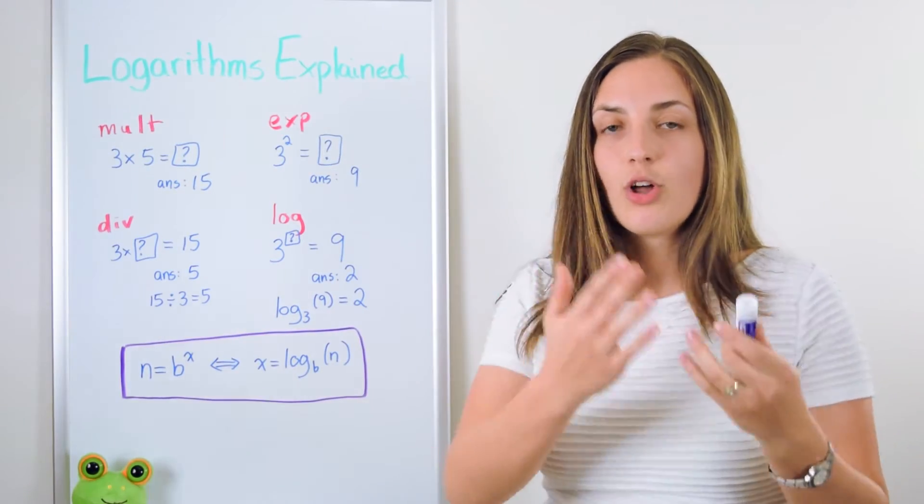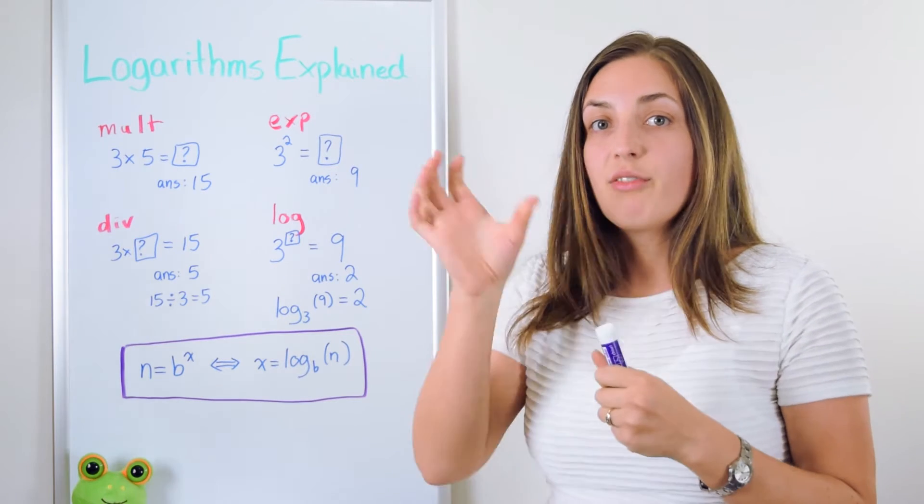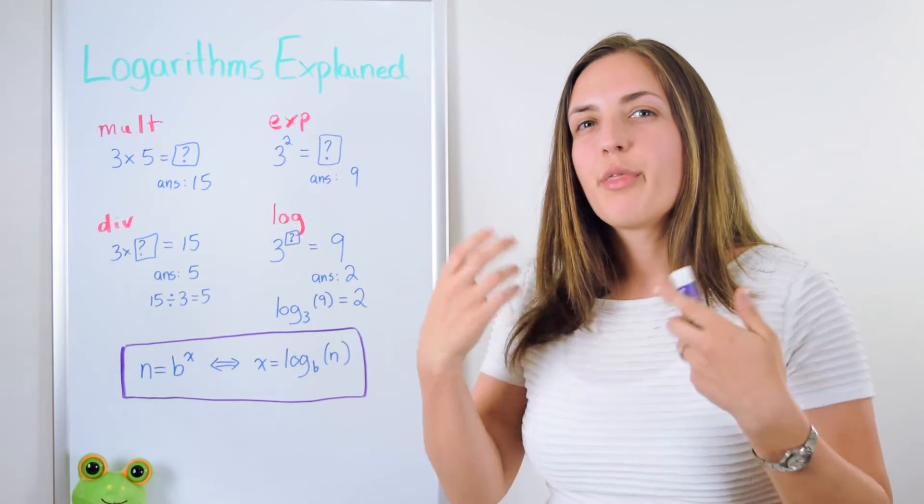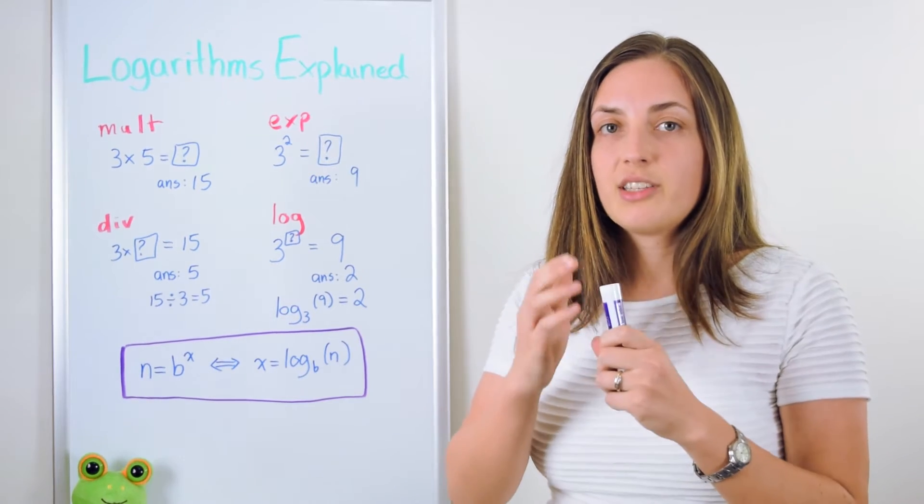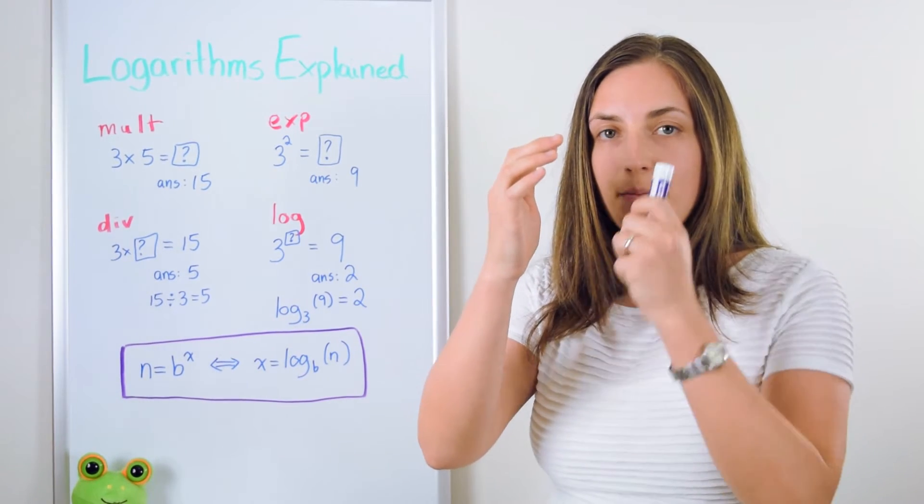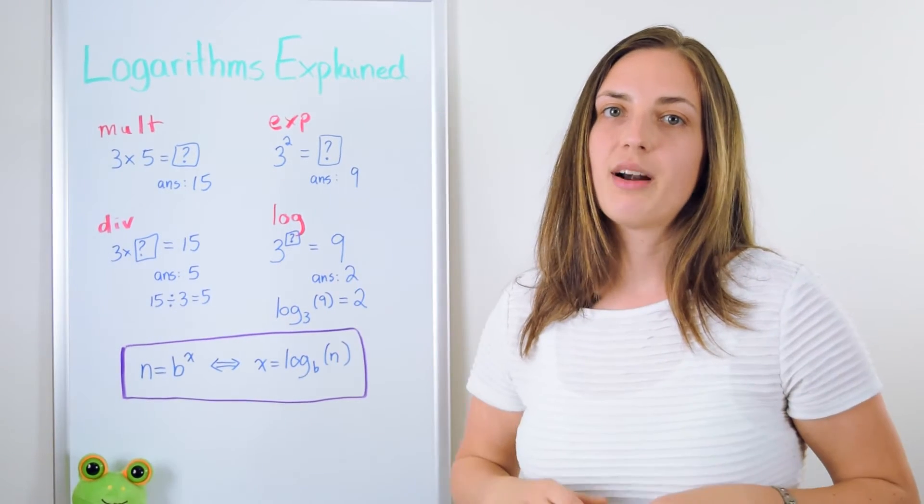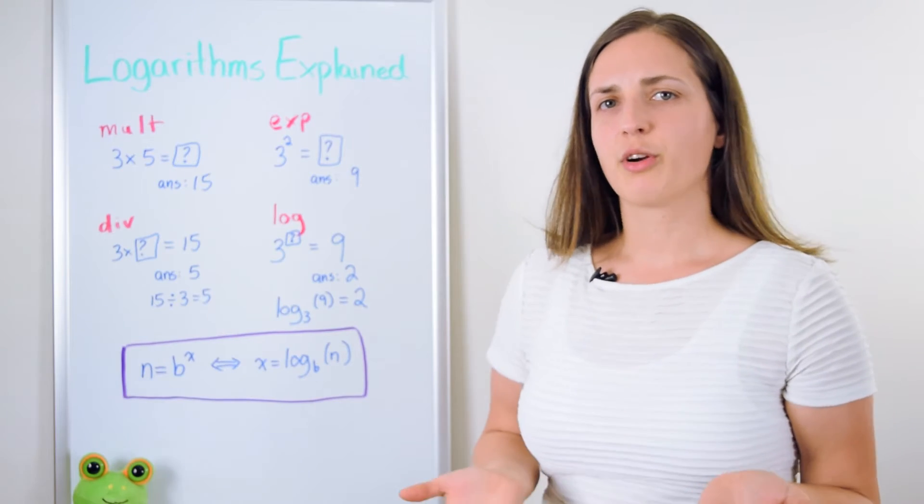So anytime you see log base b of some number n, you can think about it as asking the question what power do I need to put in my exponent to get b to that power equal to this number n. So let's work through a few easy examples.